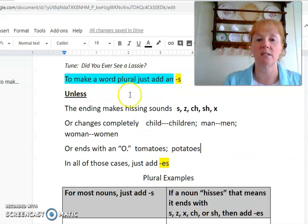So, for most words, we just add the S. But, if a word ends with a hissing sound, you'll add E-S. Sometimes the word will change completely. Or the word will end in O, we add E-S.